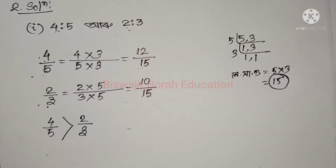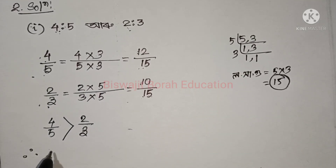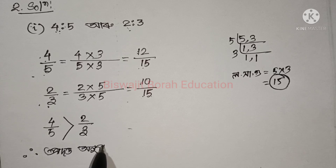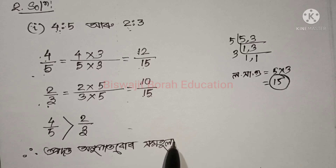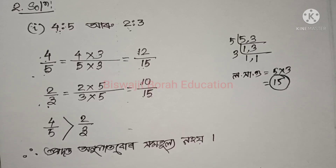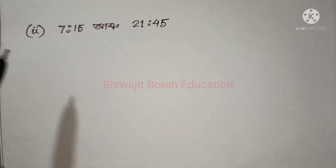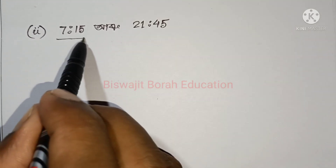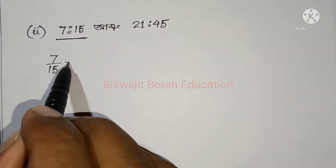The given numbers are 7 to 15 and 21 to 45. First, what do I do? I write the ratio 7 to 15. So I write 7 to 15.